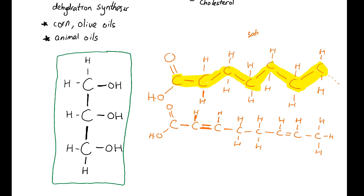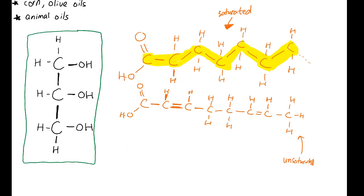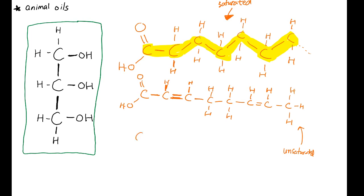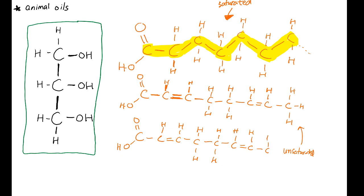The fatty acid that consists only of single bonds — with no double bonds — is what we call a saturated fatty acid. The one with a double bond is what we call an unsaturated fatty acid. Saturated means that all the carbons are filled with hydrogen and there is no double bond. Unsaturated means that there are double bonds. The third fatty acid I drew is an unsaturated fatty acid.